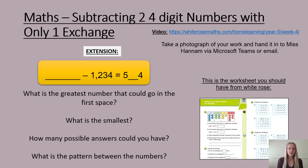In maths today we are focusing on subtracting two four-digit numbers with only one exchange. You will need to watch the White Rose video on the link provided and complete the White Rose worksheet that goes along with it. There is a picture of this on the slide if you are confused. Once finished, please take a photograph of your work and send it to me via Microsoft Teams and we will go through the worksheet and the extension answers during our morning feedback session.